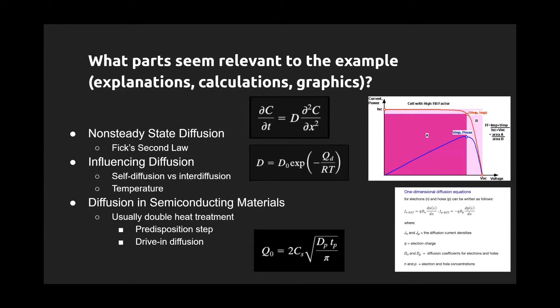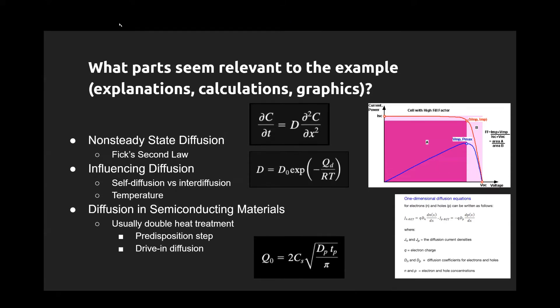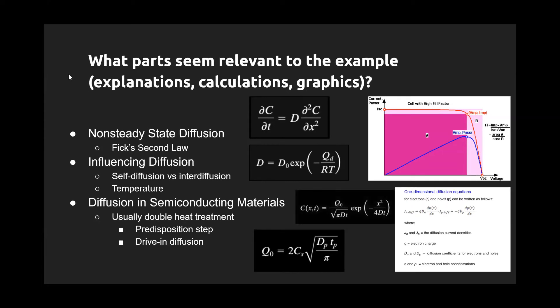When we're looking at our particular examples, we need to look at some relevant calculations or graphics that correspond to the solar cell. For starters, we look at non-steady-state diffusion, which is more common than its contrary steady-state diffusion. It is when the diffusion flux and concentration gradient are time varying, meaning there is not constant diffusion of atoms or particles. One side of the diffusion process will have more substance than the other side. This idea is known as Fick's second law.